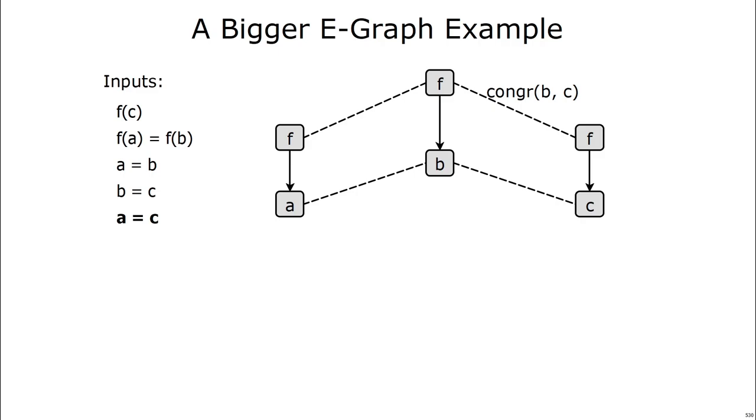Finally, we have this extra equality, a equals c. But if you look closely, a is already equal to c in this e-graph, because a and c are connected by two dotted lines. So for the equality relation this e-graph represents, the a equals c edge is unnecessary, and we don't add it to the e-graph.